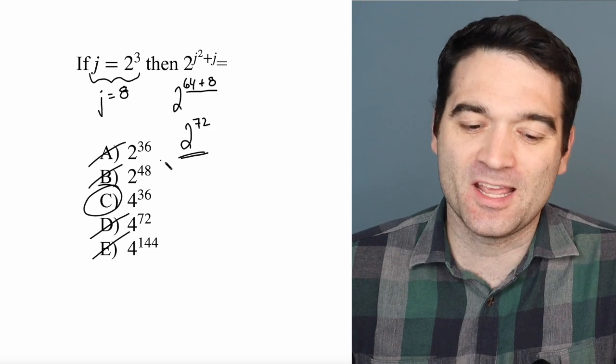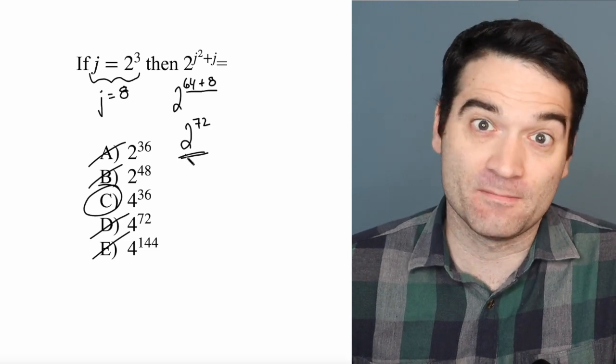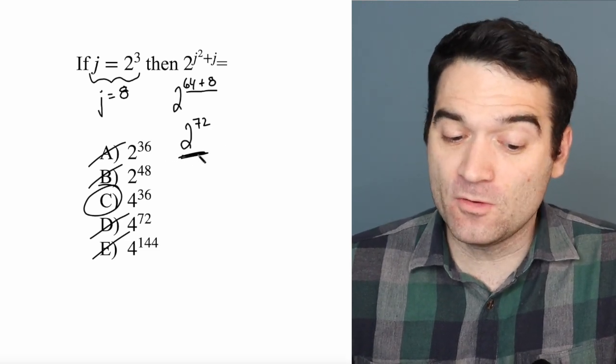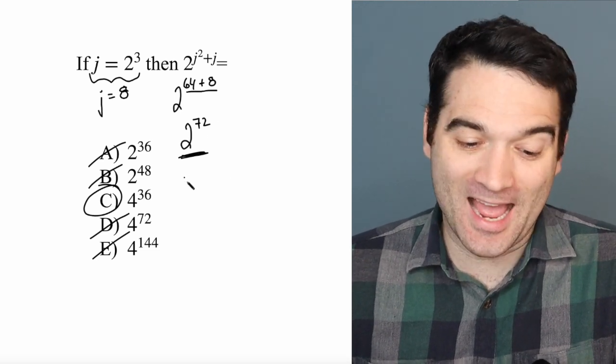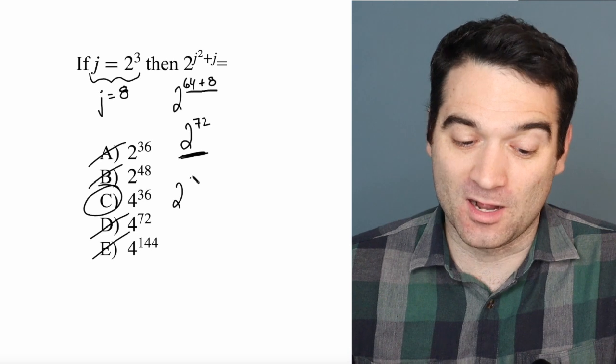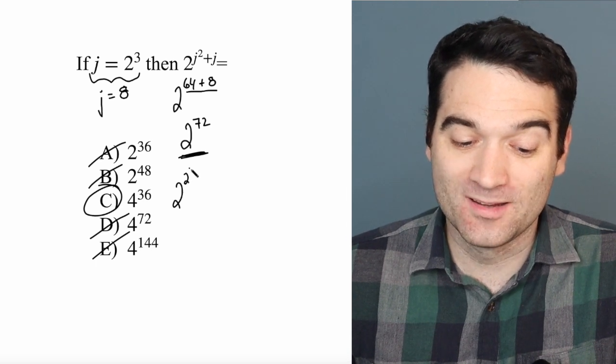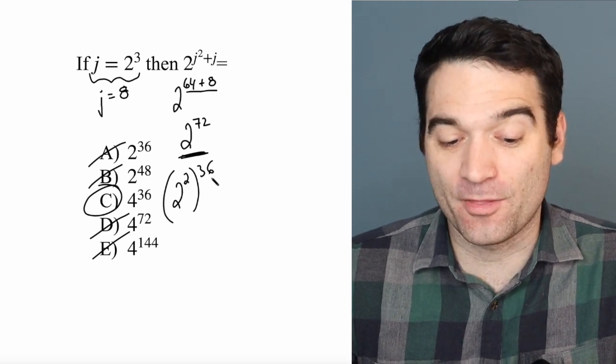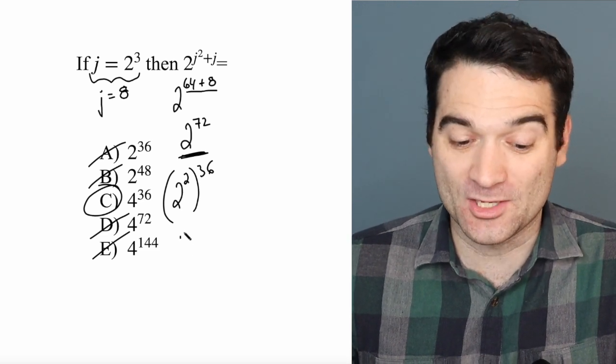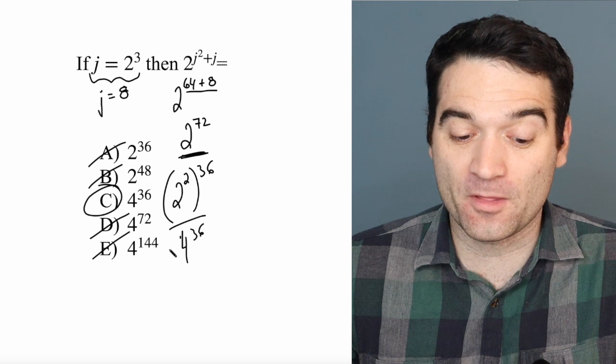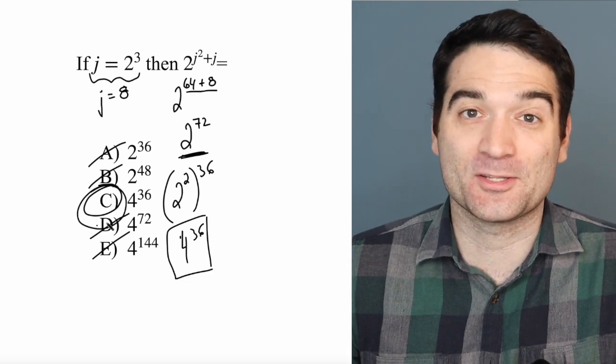But for those of you who are interested, here's the algebra behind it, or I should say the arithmetic behind it. 2 to the power of 72 can be rewritten as 2 to the power of 2, to the power of 36, if you know your exponent rules. And 2 to the power of 2 is 4, so that makes 4 to the power of 36, meaning the correct answer is C.